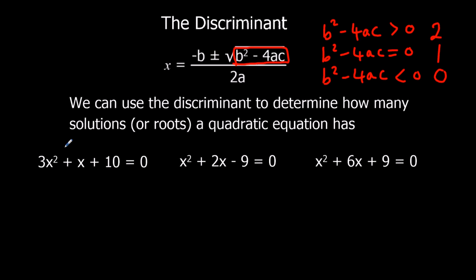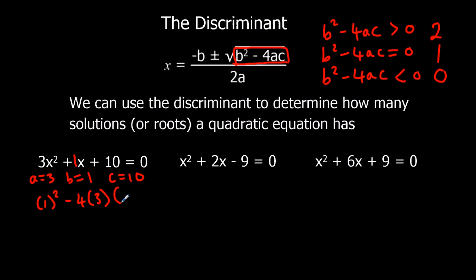Let's look at these quadratic equations and see how many roots they have. For the first one, a is 3, b is 1, and c is 10. Substituting into b squared minus 4ac: 1 squared minus 4 times 3 times 10 gives us 1 minus 120, which is negative 119. It's negative, less than zero, so it's got no solutions or no real roots.